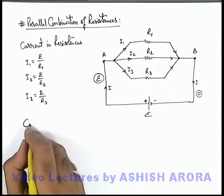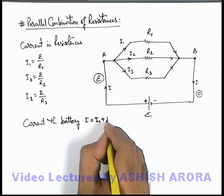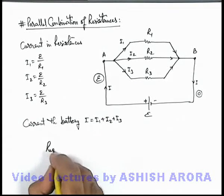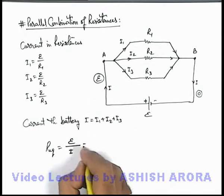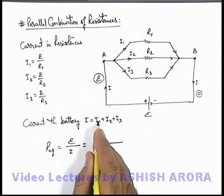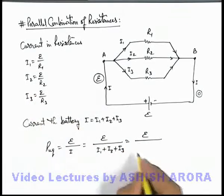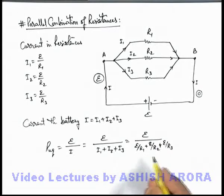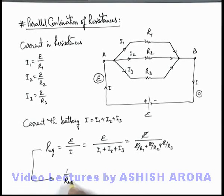Now if we calculate the total current through the battery, this can be given as i, which is equal to i1 plus i2 plus i3, because this current is divided into the 3 resistances. To find the equivalent resistance for the combination, that will be the applied potential difference divided by the current i. Substituting the values: e divided by i equals e divided by (i1 + i2 + i3), which equals e by R1 plus e by R2 plus e by R3. Here e gets cancelled, and taking the reciprocal, 1 by R-equivalent is equal to 1 by R1 plus 1 by R2 plus 1 by R3.